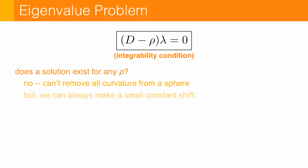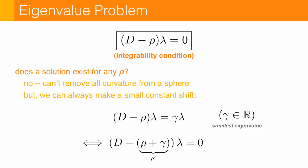On the other hand, it turns out we can always get what we asked for, up to some small constant shift. In particular, if I solve the eigenvalue problem d minus rho lambda equals gamma lambda for the smallest eigenvalue gamma, then that's equivalent to saying I've satisfied my integrability condition above for some new function rho plus gamma.